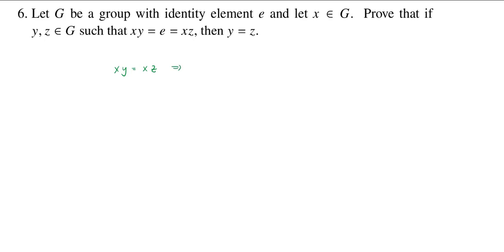would imply if I multiply both sides on the left by X inverse, right? We're in a group. We know that every element is invertible. So if I multiply both sides by X inverse, then I'll get that X inverse times the product XY is equal to X inverse times the product XZ.